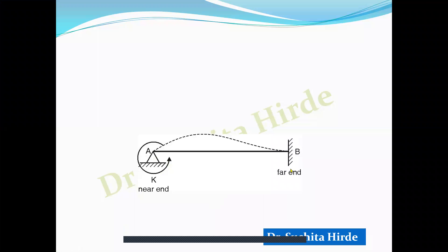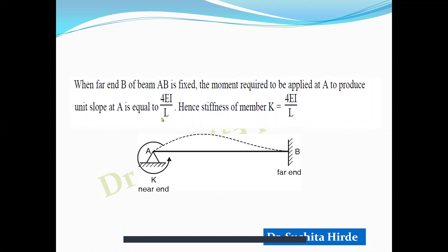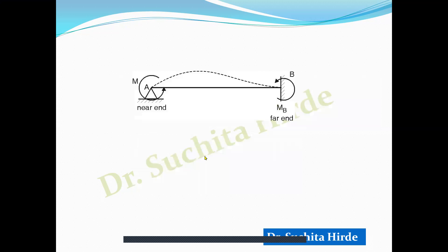We know that if the far end is fixed, then the moment required to make the slope equal to 1 is equal to 4EI/L. To keep the slope equal to zero at the other end, some moment is automatically generated there. So at the near end, the moment required to make theta equal to 1 is 4EI/L, and at the far end the moment is half of this, which is equal to 2EI/L. This is called stiffness.